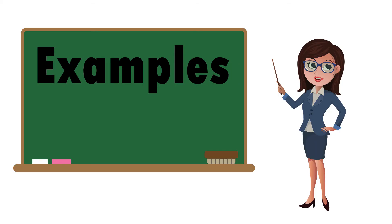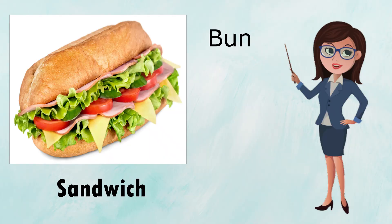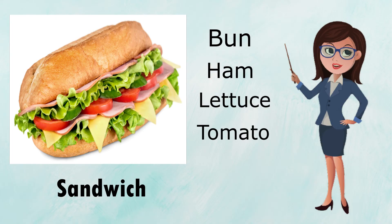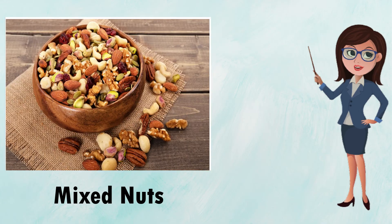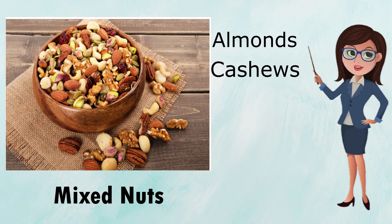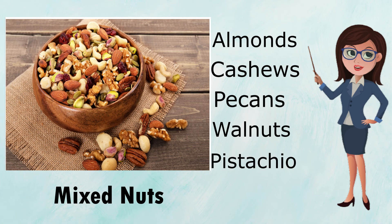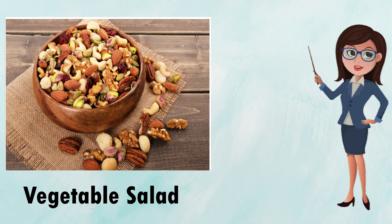Examples. Sandwich — made from bun, ham, lettuce, tomato, and cheese. Mixed nuts — including almonds, cashews, pecans, walnuts, and pistachio.